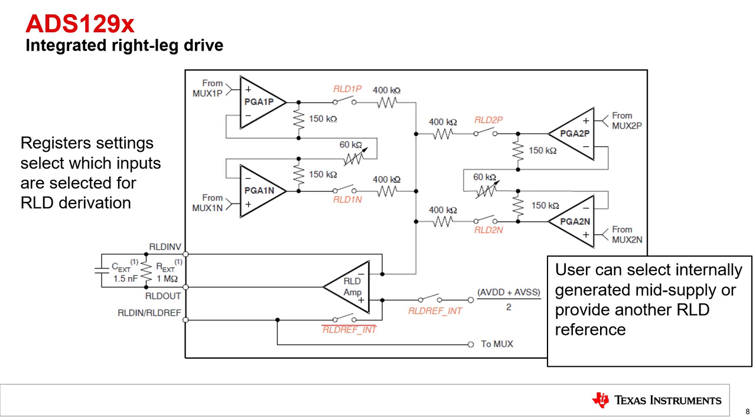The right leg drive amplifier and summing junction for the common mode voltage are also integrated with the ADS129X devices. This feature allows for some user programmability in order for the customer to design the best performance circuit depending on their application. An internal register selects which electrode inputs are allowed to feed to the RLD amplifier inverting input through the register summing junction. The output of the amplifier and feedback loop are connected to external device pins which allow the user to set the gain and bandwidth of the RLD circuit.